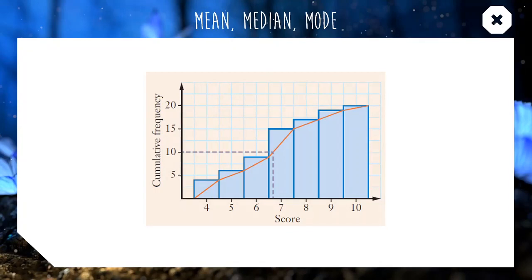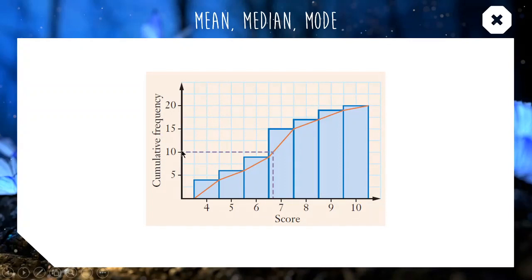One of the main reasons we looked at cumulative frequency histograms with our polygon — or ogive — is that this line is really useful for estimating the median. Here is a data set where cumulative frequency goes up to 20, so the median is going to be around the 10th and 11th scores. We can see that both the 10th and 11th scores hit in the 7, so either way that's our median. Cumulative frequency histograms are really easy for finding things like the median.